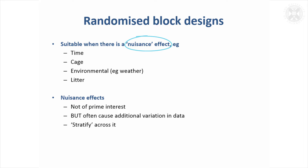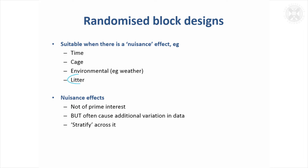It might be that due to practical restrictions you're having to carry out the study at different time points on different days. So time might be a factor that you don't want to study, but you'd like to ensure that it doesn't affect the study results. Likewise, animals in cages — cage might have an effect but you don't want it to influence your results. The weather, if you're studying animals on farms at different times of year, or litter — animals in the same litter. These might be described as nuisance effects: you don't want to study them, but they can cause additional variation and biases in the data. So what we might call stratify across them using this randomised block design.